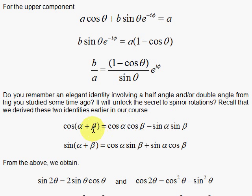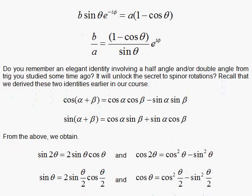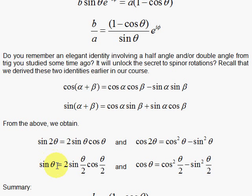We're getting close to understanding the secret of spinors, because half angles are going to show up here. Let's review some trig identities. We derived these two identities earlier in our course — the cosine and sine of the sum of angles. Letting the angles be equal, we have cosine of 2 theta equals cosine squared theta minus sine squared theta, and sine of 2 theta equals 2 sine theta cosine theta.